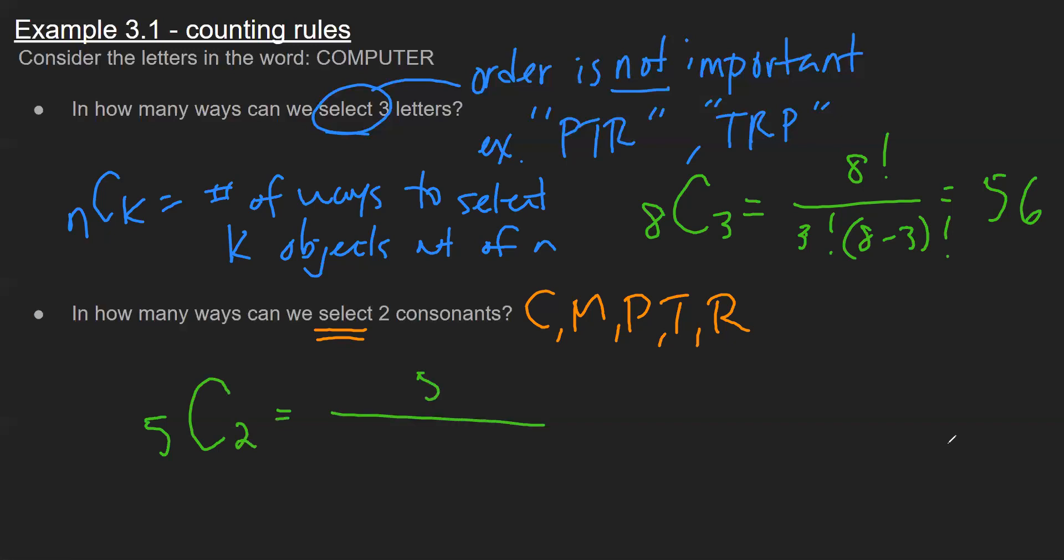So plugging them into the same formula above, we get that counting rule. And my calculator tells me this is 10. So those are some different variations of just counting examples in 5A.